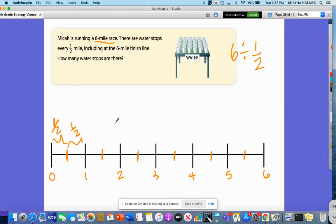So right here, this little model already tells me. So I have a half mile here, here, and then so on. So that would be 1, 2, 3, 4, 5, 6, 7, 8, 9, 10, 11, and 12 because we're including the one at the end.